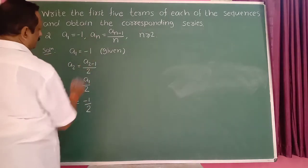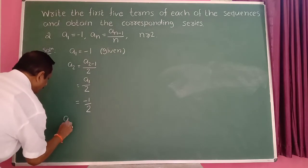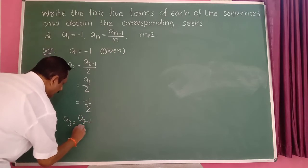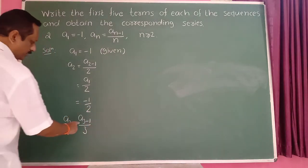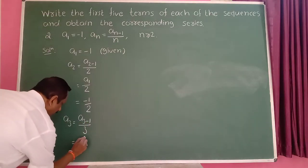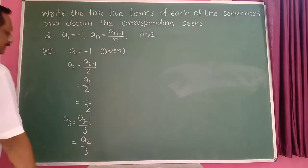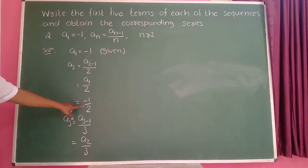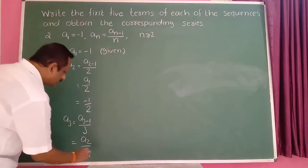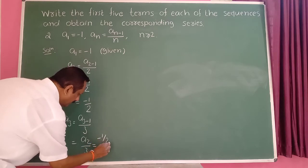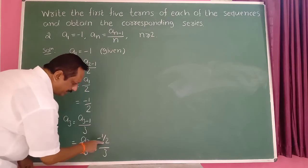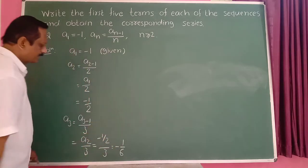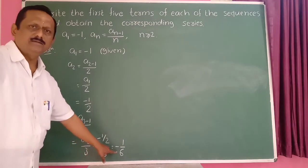Put n equal to 3. So a_3 is equal to a_(3-1) divided by 3, which is a_2 divided by 3. But a_2 is minus 1 divided by 2. So this is equal to minus 1 upon 2 divided by 3. Taking 2 to the denominator, minus 1 upon 6. So the third term is minus 1 upon 6.